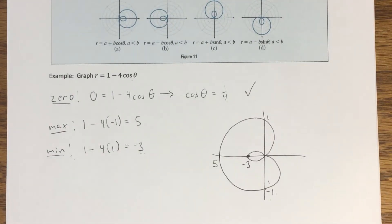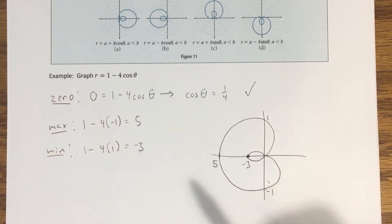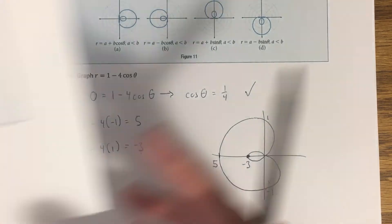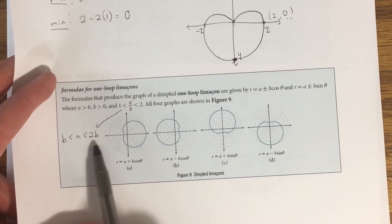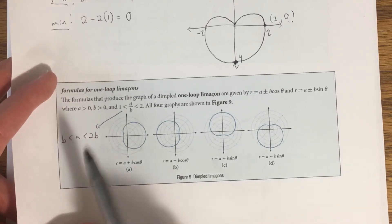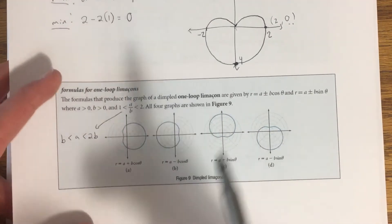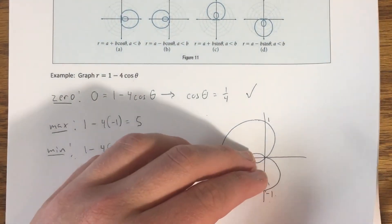Those are the three cases of limaçons: the cardioid, the one-loop or dimpled limaçon, and the inner-loop limaçon — sometimes called a two-loop limaçon. There's another case we're not covering called a convex limaçon, which occurs when a ≥ 2b and looks like a circle with a somewhat flat side.